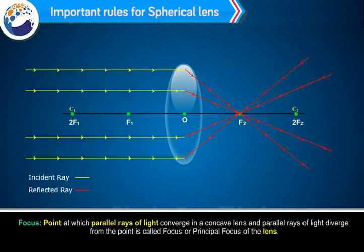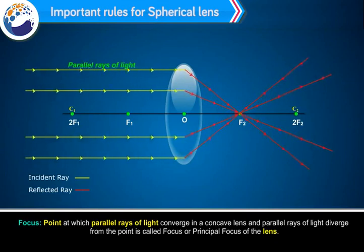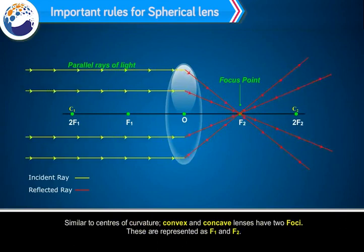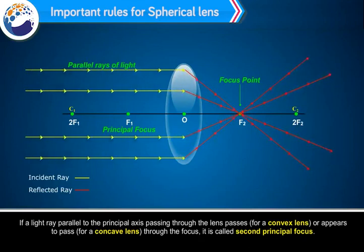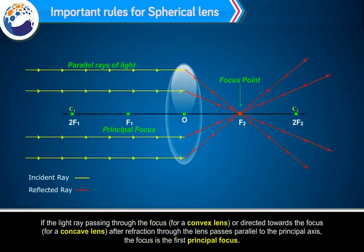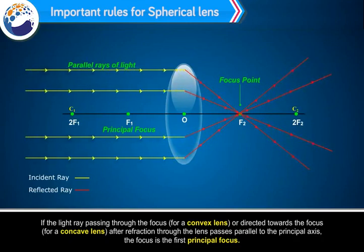The point at which parallel rays of light converge for a convex lens, or from which parallel rays appear to diverge for a concave lens, is called the focus or principal focus of the lens. Similar to centres of curvature, convex and concave lenses have two foci, represented as F1 and F2. If a light ray parallel to the principal axis passes through the focus after passing through a convex lens, or appears to pass through it for a concave lens, it is called the second principal focus.